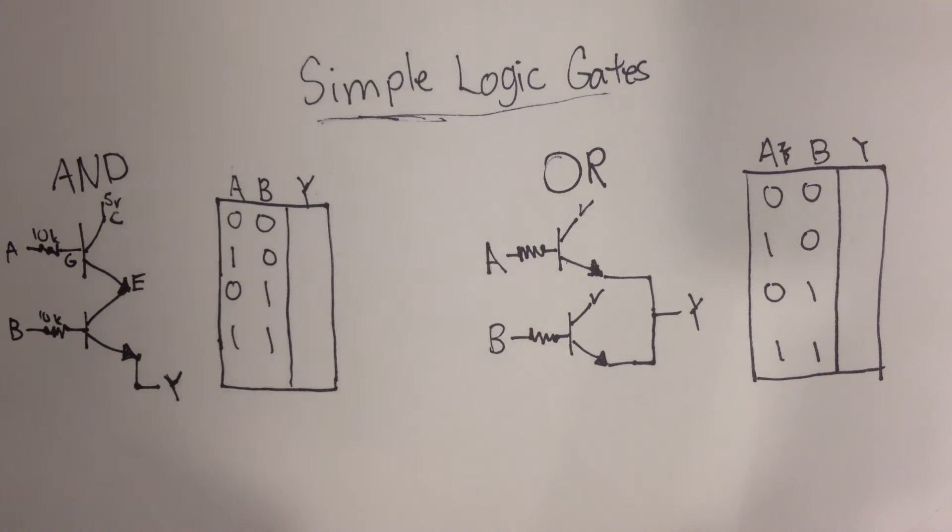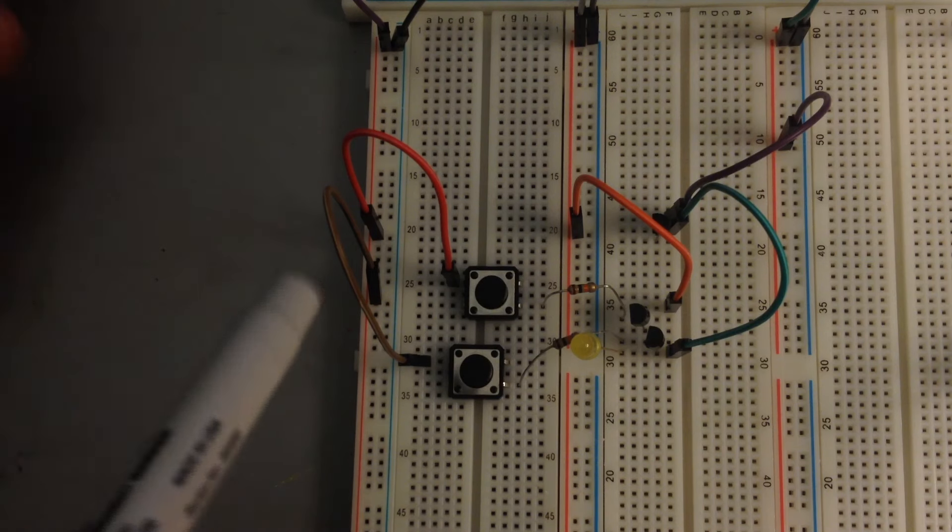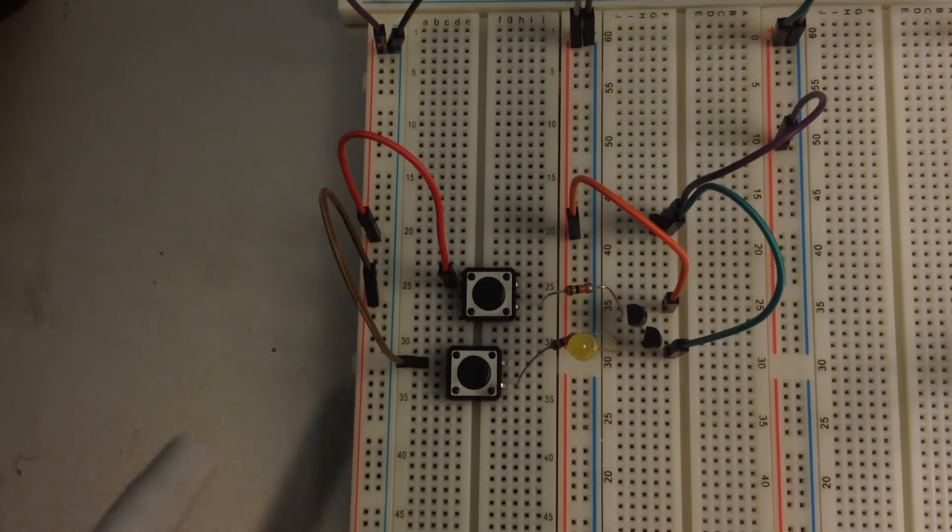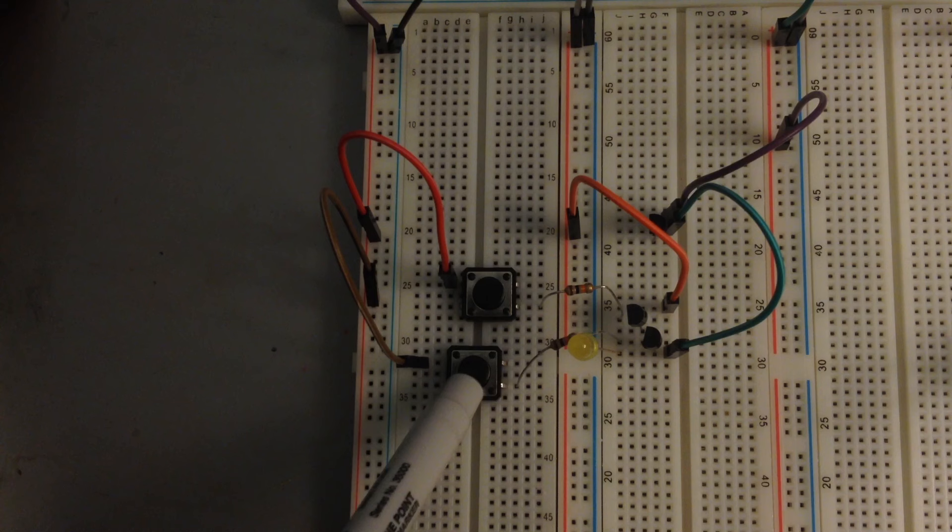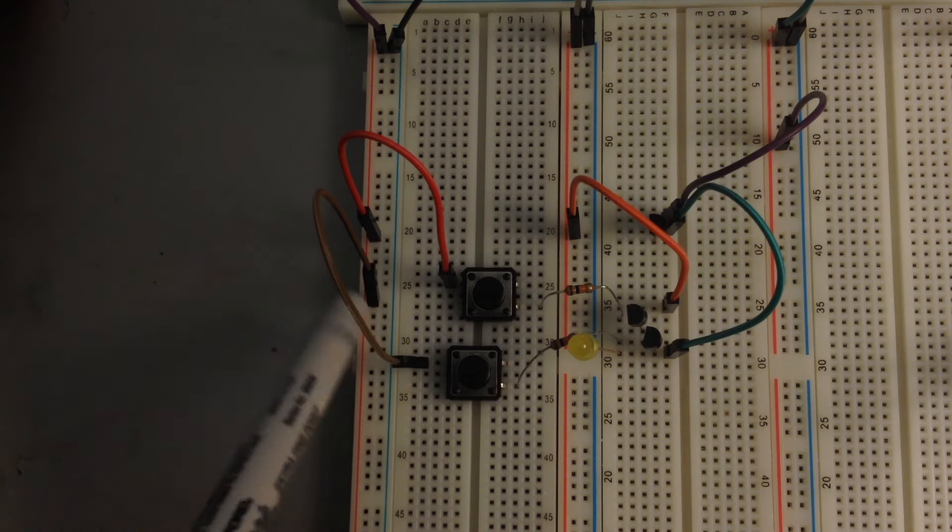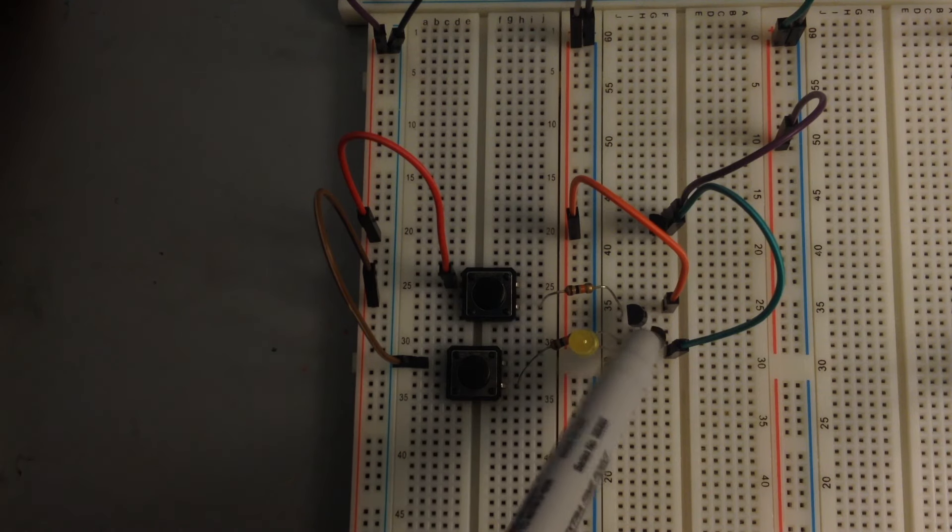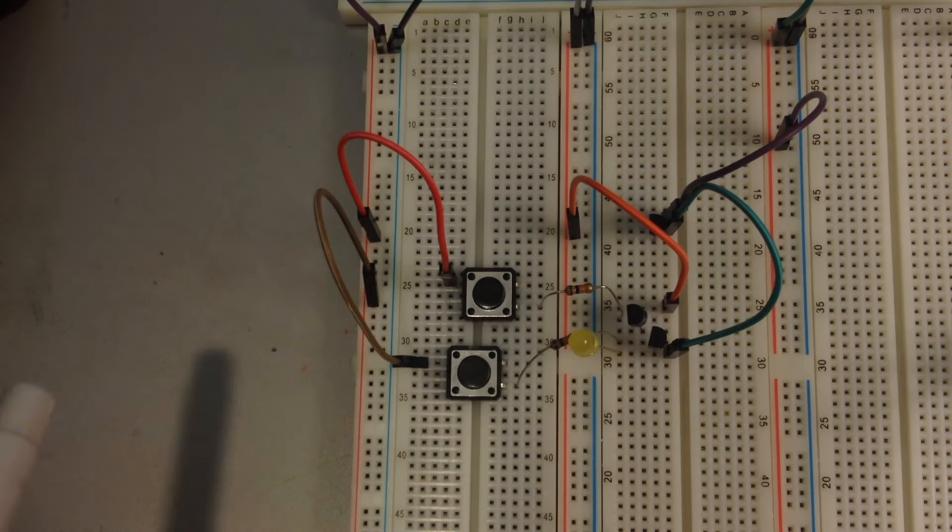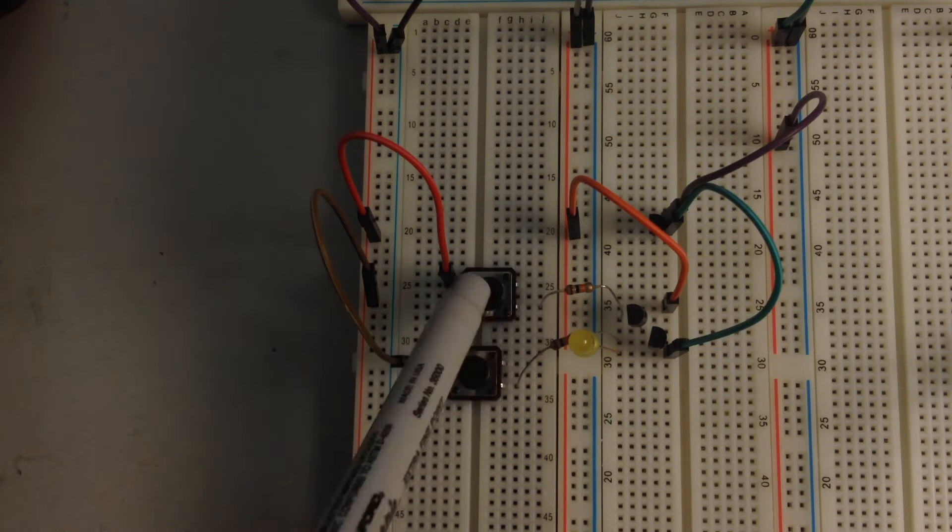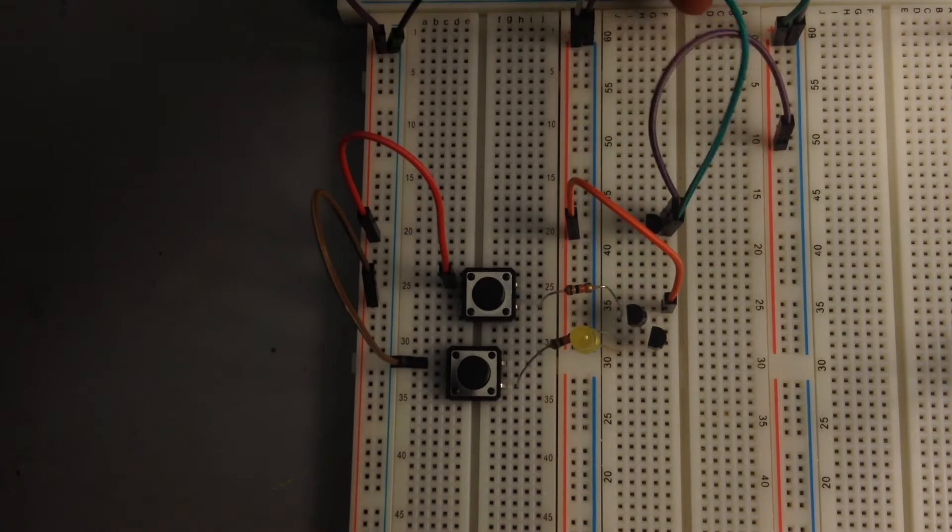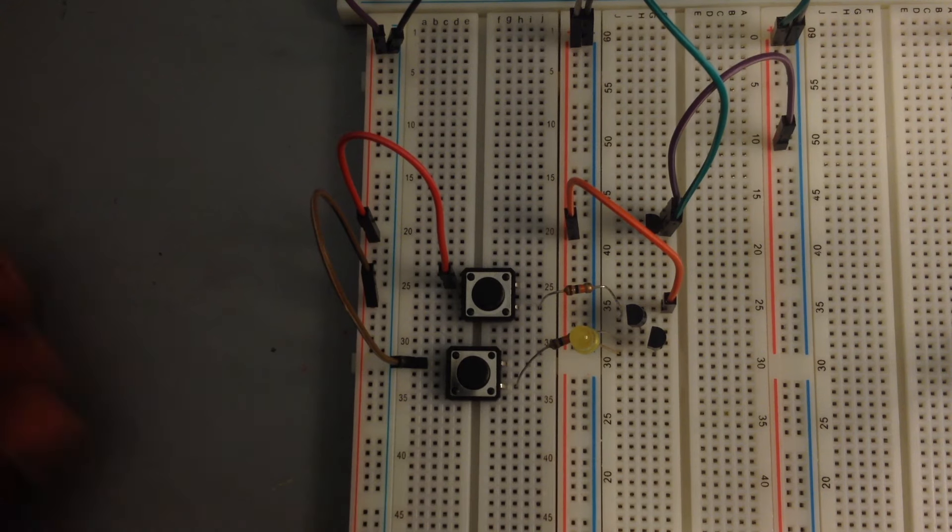So I have this built here. So this is the AND gate that we saw earlier. This is what was on the page. So we have a switch here going from power through a 10K resistor into the gate, the middle leg, of a transistor. And we have the same thing for the second switch, and these transistors are put into series, and then we have the emitter of the last one going into our LED.